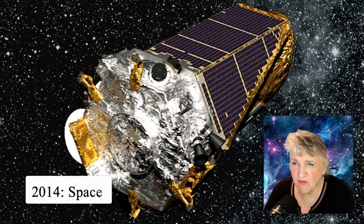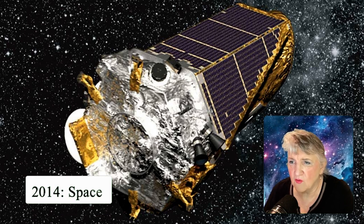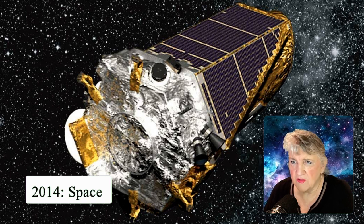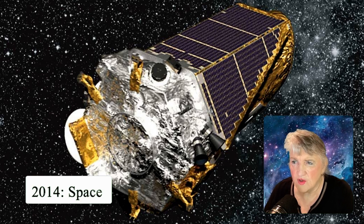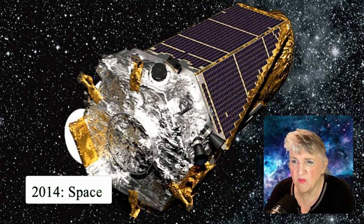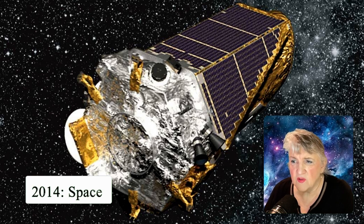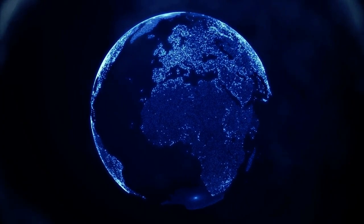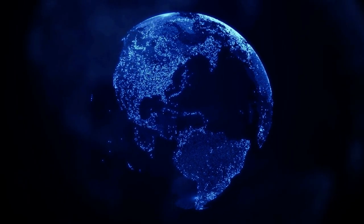On April 17th, 2014, NASA's Kepler Space Telescope confirmed the discovery of the first Earth-sized planet in the habitable zone of another star. The Kepler Space Telescope was launched in 2009 with a planned mission of three and a half years, but it lasted nine years and seven months and was finally deactivated in November of 2018.